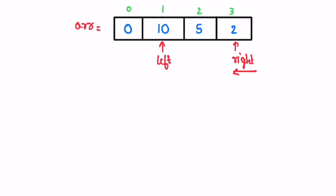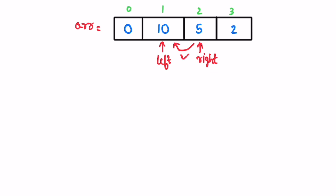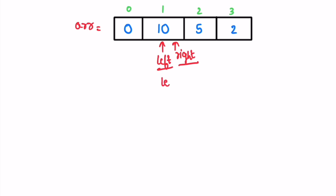Now we move the right pointer. If the element at right is strictly less than the element to its left, we decrement right. Two is less than five, so we decrement. We keep checking: if the element at right is strictly less than its adjacent element, we decrement again. We stop when it's not less. At the peak, left will always equal right, so you can return either index.